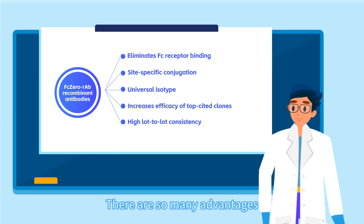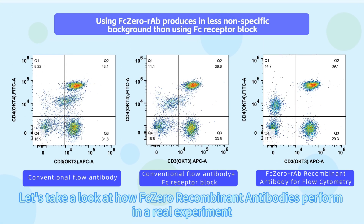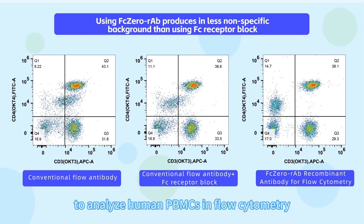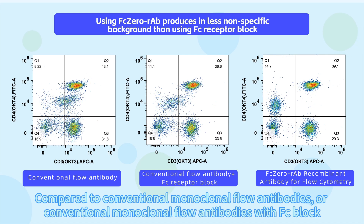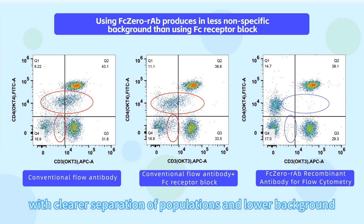Wow, there are so many advantages. Let's take a look at how FCo-RAB recombinant antibodies perform in a real experiment by using FCo-RAB CD3 and CD4 recombinant antibodies to analyze human PBMCs in flow cytometry. Compared to conventional monoclonal flow antibodies, or conventional monoclonal flow antibodies with FC block, using FCo-RAB antibodies results in cleaner data, with clearer separation of populations and lower background.